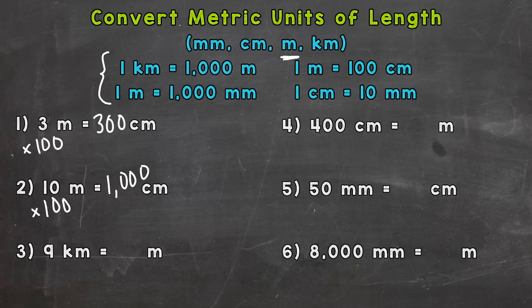Number three: nine kilometers equals how many meters? Well, in one kilometer there are one thousand meters, and we have nine of them. When we go from kilometers to meters, we multiply by a thousand. So nine times a thousand gives us nine thousand meters.